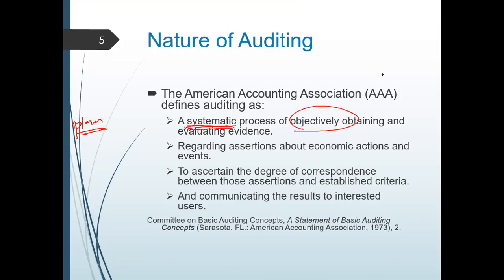Your criteria, if you try to go over it, you have it in your auditing theory — that's why it's called an objective obtaining of your evidence. And when you do an audit, how can you certify or ascertain that the FS is fairly stated without misstatements? By using your evidence. It is a systematic process of objectively obtaining and evaluating evidence regarding assertions.